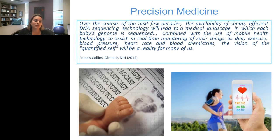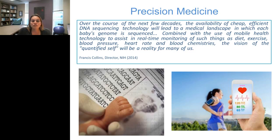As the director of the National Institutes of Health, Francis Collins, has predicted, over the course of the next few decades, the availability of cheap, efficient DNA sequencing technology will lead to a medical landscape in which each baby's genome is sequenced. Combined with mobile health technology for real-time monitoring of diet, exercise, blood pressure, heart rate, and blood chemistries, the vision of the quantified self will become a reality for many of us. This is the prediction and vision of what the future of genomics and precision medicine are going to look like.